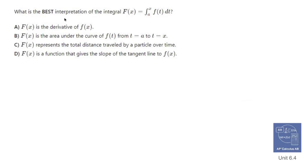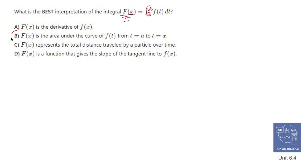What is the best interpretation of the integral antiderivative capital F of x equals the integral from a to x of f of t? The antiderivative gives you the area under a curve from 0 to x, which is the answer b.